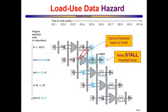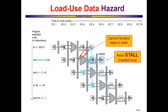In previous videos we talked about this special load-use data hazard that required us to introduce a stall — basically bubbles that are the equivalent of executing a no-operation instruction — to cope with the situation where forwarding was not working.